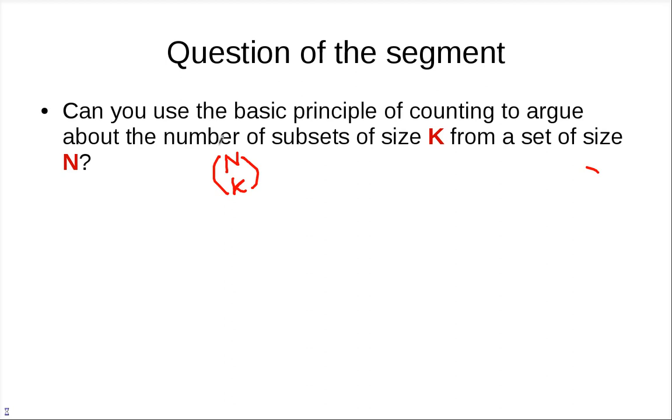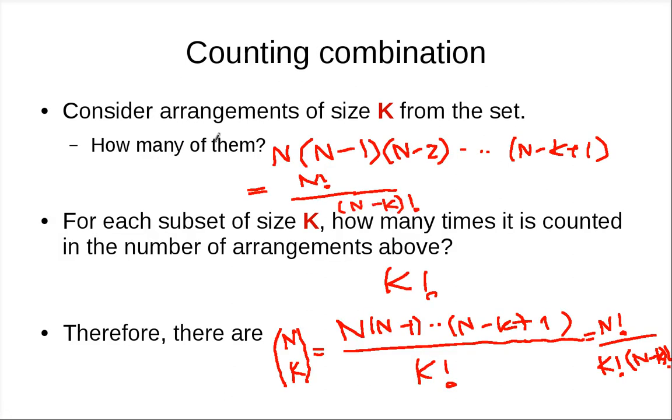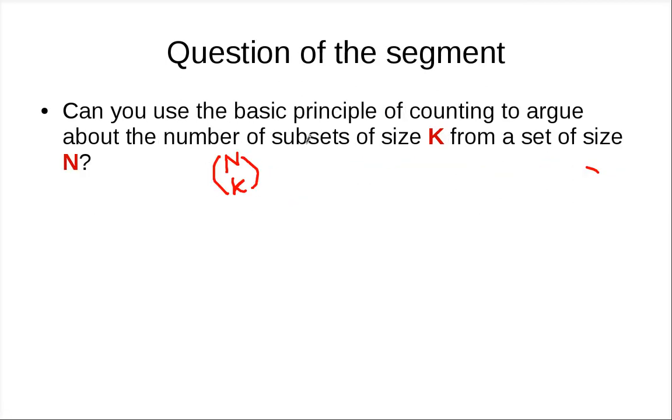In the same way as we did here. So we want to show that the number of subsets of size K is N factorial over N minus K factorial divided by K factorial, using the basic principle of counting. Can you do that? That's the question. Think about it. See you later.